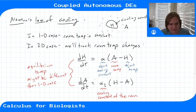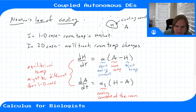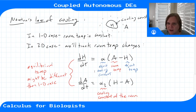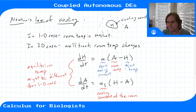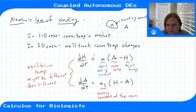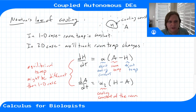This is where we're going next: thinking about the equilibria of coupled differential equations and how they differ from equilibria in the one-dimensional case. We'll find the stability of these equilibria, solve these systems around equilibrium points, and see where trajectories are going — giving us a good idea of what's happening in these more complex, but more realistic, models.